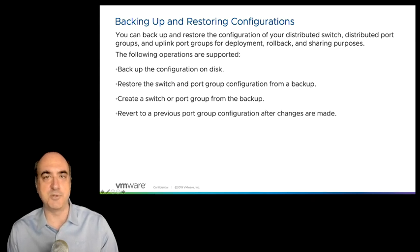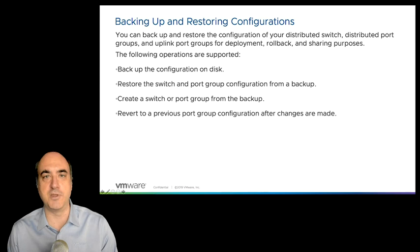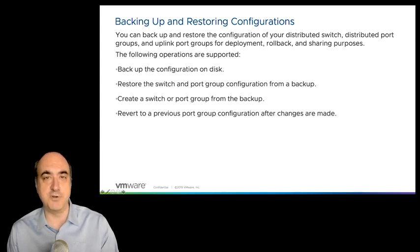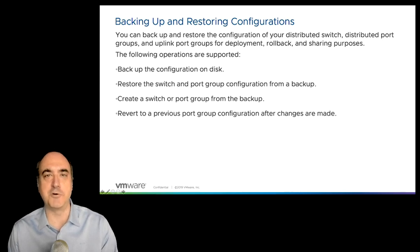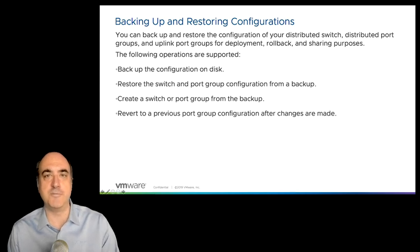We call it backing up the distributed switch, but in the user interface you right-click on the distributed switch and select Export Configuration. That will export the entire virtual switch. You will be given the option to export the port group right along with that. You can also do the same on a port group — just back up the port group by selecting export. Once you've done that, you've got a file saved wherever you want. You can then restore from that file to replace a broken distributed switch or broken port group if you need to.